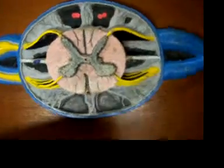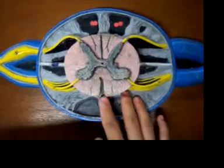Which is this area right here in the middle of the ventral column. This is the anterior median fissure.